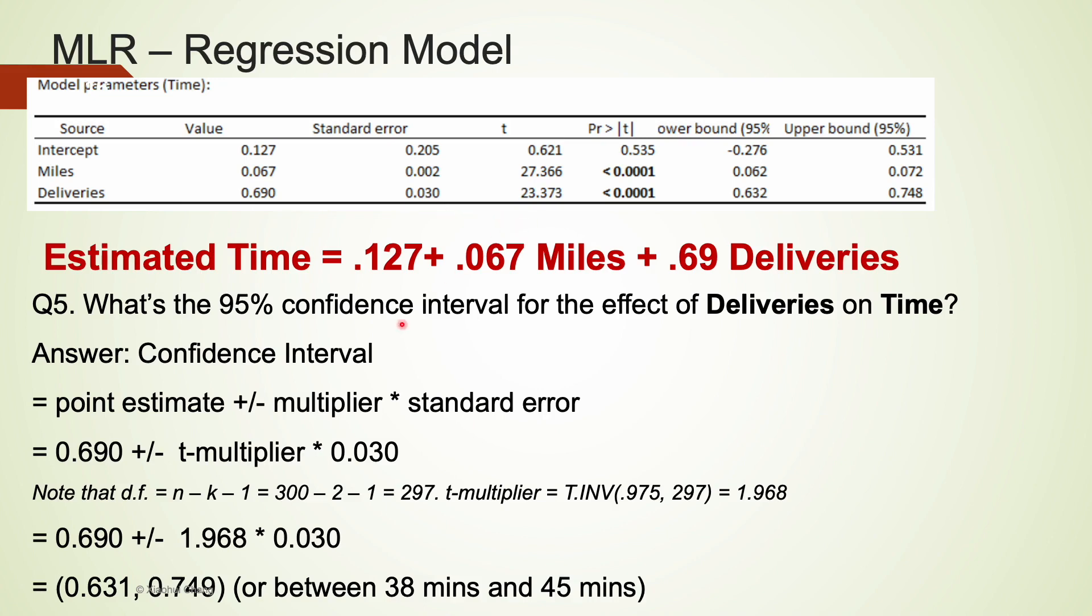And it is a t-statistic. So the multiplier is actually a t-multiplier. Whenever we are dealing with a t-multiplier t-distribution, we have to calculate the degrees of freedom. That is n minus k minus 1. Sample size is 300. k is the number of independent variables used in our model. We are considering both miles and deliveries in this multiple linear regression. So k is 2 minus 1. That's 297. We can find the t-multiplier using Excel function t.inv. And even though we are considering 95% confidence interval, the first argument for t.inv, we should use 0.975. Please feel free to refer to the video on confidence interval estimation and why we used 0.975 instead of 0.95 to find this t-multiplier. This t-multiplier is plugged in here.